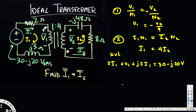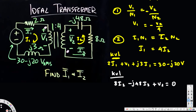For the second loop, with current i2, the KVL equation is: 8·i2 − j48·i2 + v2 = 0. The voltage drops across the 8Ω resistor, the −j48 impedance, and the transformer secondary v2 sum to zero.